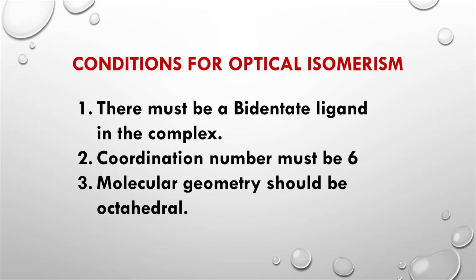To possess optical isomerism, certain conditions must be met. A complex must satisfy these conditions. There must be the presence of bidentate ligand. The coordination number must be 6. The complex should also possess octahedral geometry.